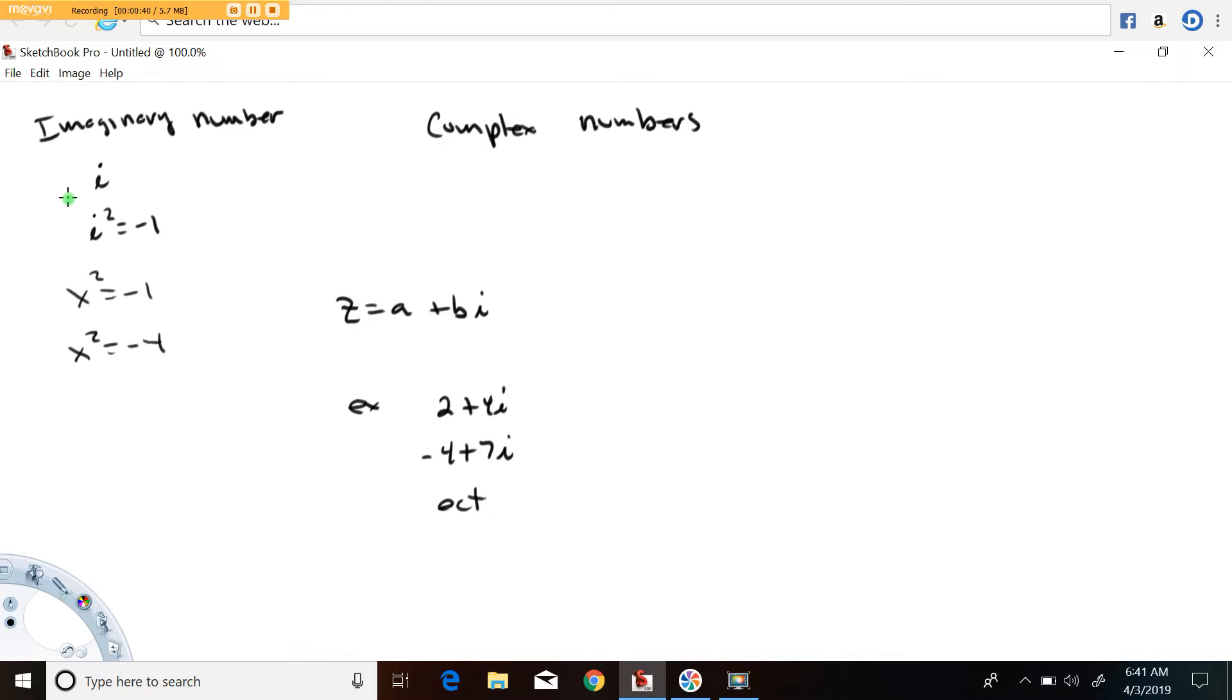But they do have what's called an imaginary solution. In the case of this example, the value of x such that x squared is negative four would be 2i. And actually plus or minus 2i because minus 2i also squares to negative four.